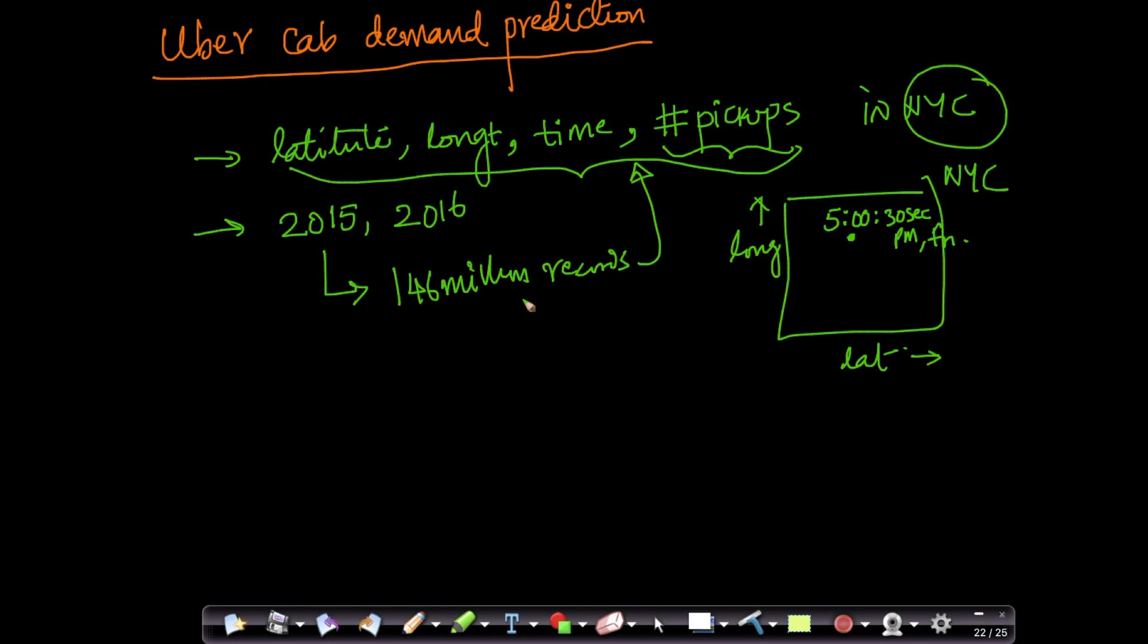We have roughly one crore in the Indian numerical system or about 10 million records per month, roughly approximately. We're also given data for 2016, and the total size of data between 2015 and 2016 is about 24 gigs, 24 GB of data. So fairly large amount of data in here with lots of records.